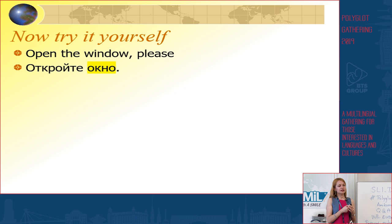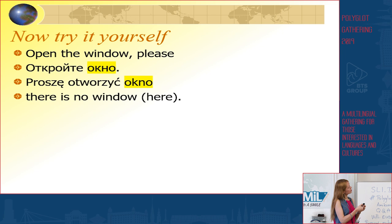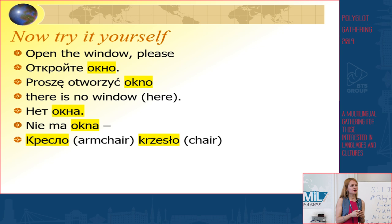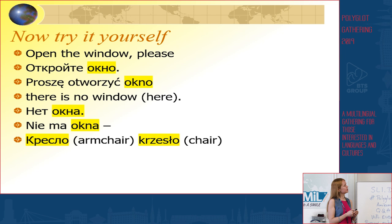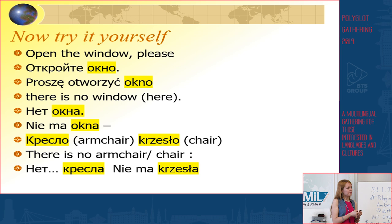Let's look at the neutral gender again together. Proszę otworzyć okno. Откройте окно. Nie ma okna. Нет окна. Let's look at the word кресло — a Russian word meaning armchair — and krzesło, a Polish word meaning chair. A bit different. However, if there is no armchair or chair, how would you say it? Нет кресла. Nie ma krzesła.